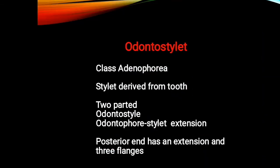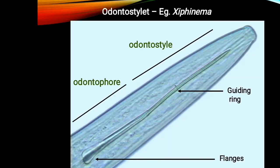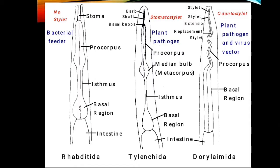The odontostellate belongs to the class Adenophorea, which is the aphasmid group. It is a stylet derived from a tooth and is a two-parted structure: the odontostellate itself and the odontophore, which is the stylet extension. The posterior end has an extension and also three flanges. Among flanged forms, one example is Xiphinema and a flanged one is Longidorus.